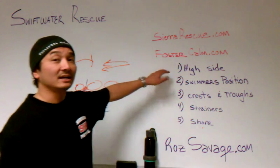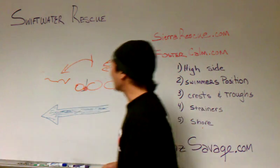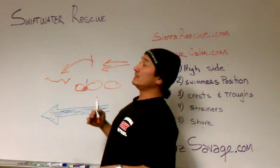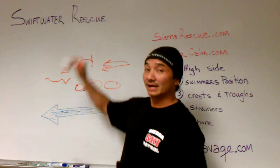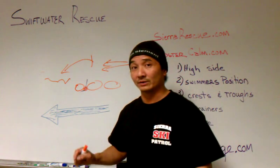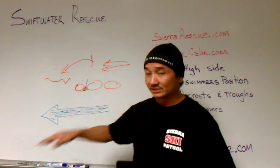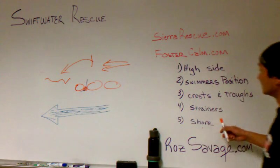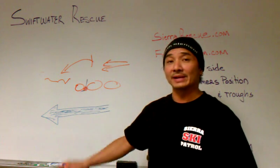Let's review. High side: your head and body weight towards the rock. Swimmer's position: flat, with all your weight on your PFD. In the crest and trough: breathe at the trough — the bottom — not the top. Strainers: avoid strainers, no bueno situation. That's different from reeds or grass at the side of the river — strainers suck you down, grass just scratches you a little. And of course, getting to shore: crawl all the way up and out of the shoreline.